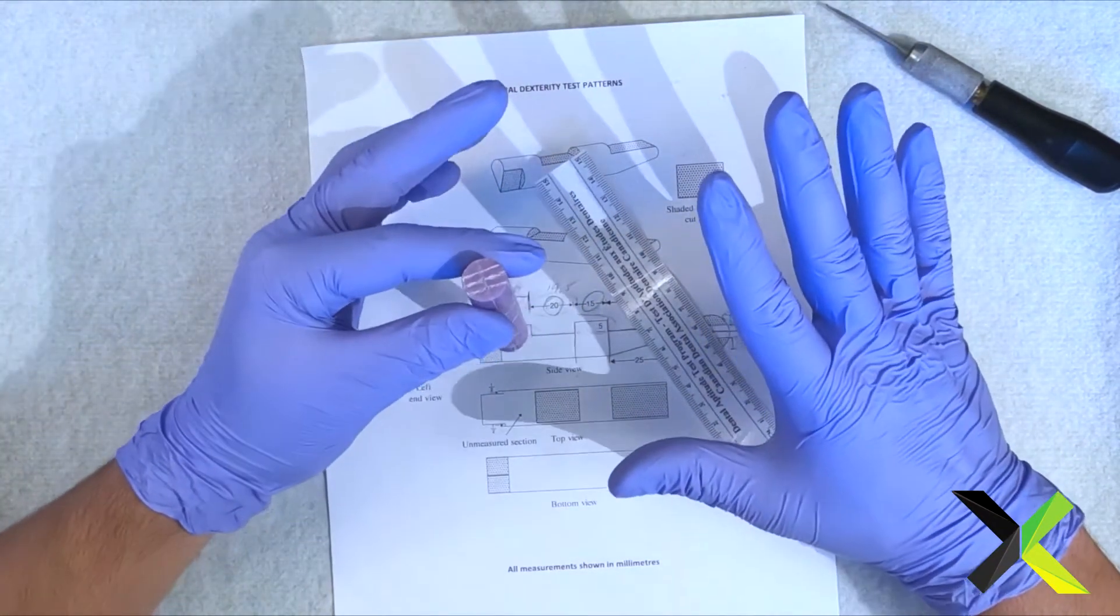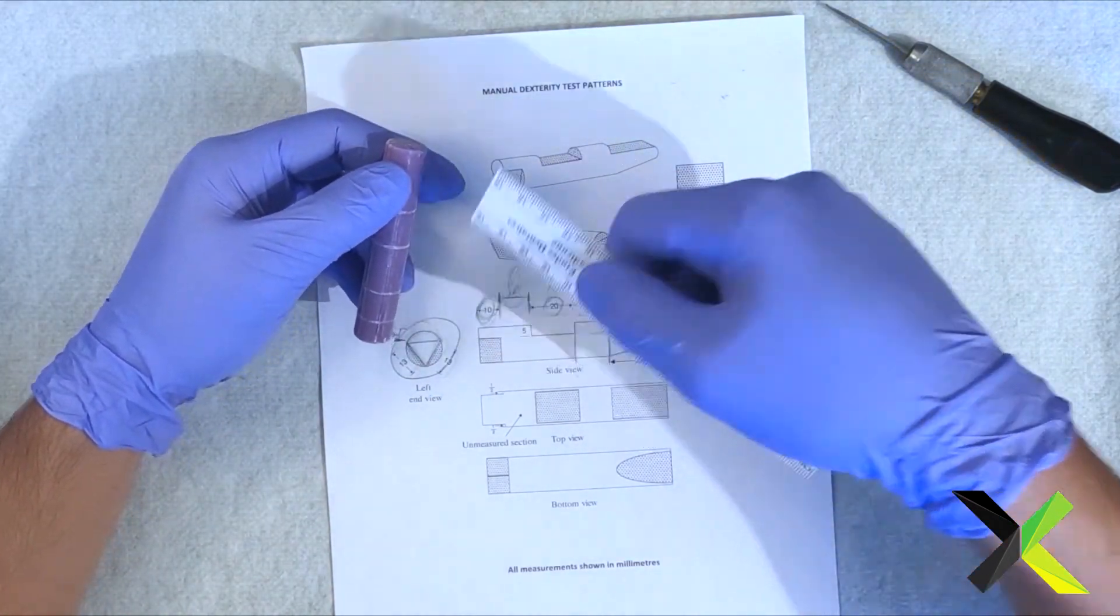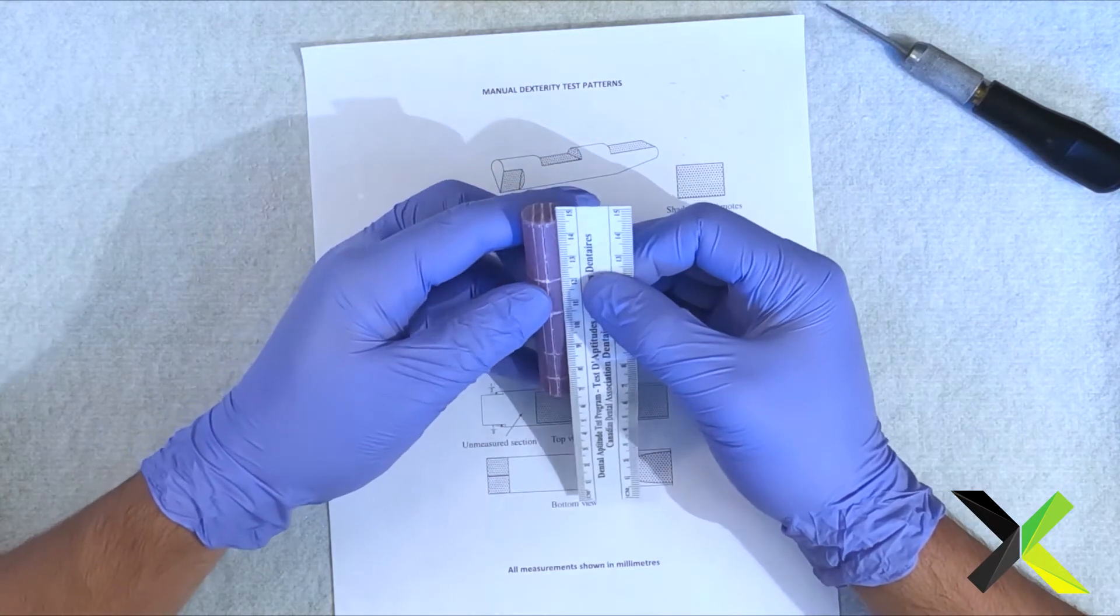So before you make any of your cuts, it's really important to double check. So 25, 15, 20, and the last is 10. Let's make sure that that's absolutely on point.